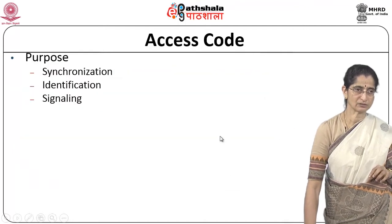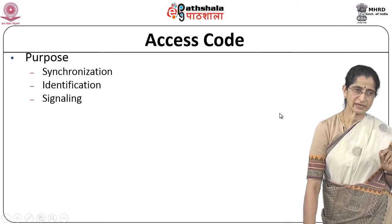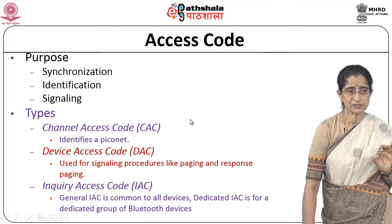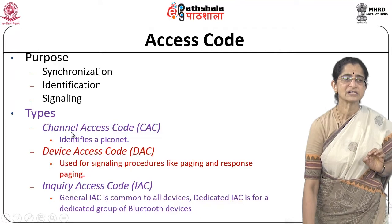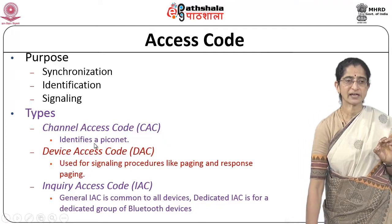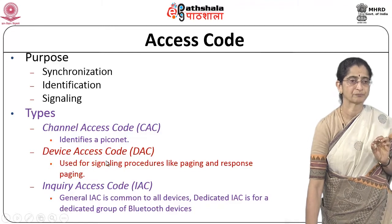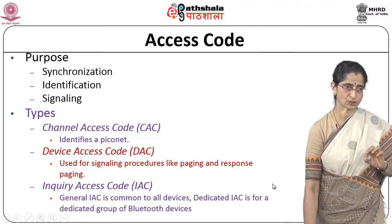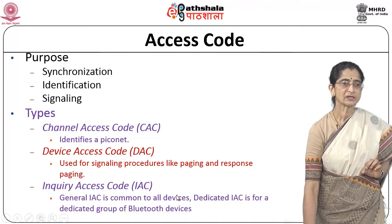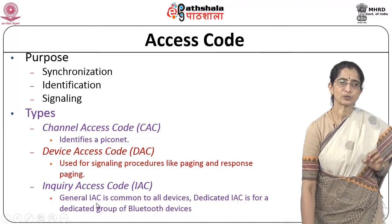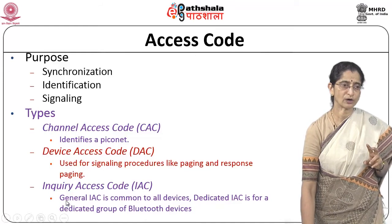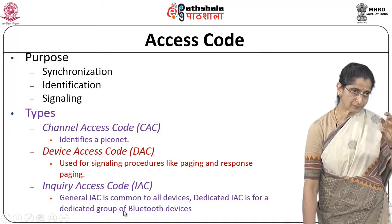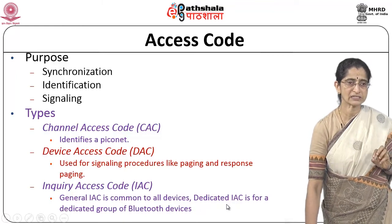The access code provides synchronization, identification, and signaling. There are different types of access codes: the Channel Access Code (CAC) identifies a particular Piconet; the Device Access Code (DAC) is used for signaling procedures like paging and page response; and the Inquiry Access Code (IAC) has two variants — the General IAC (GIAC), which is common to all devices, and the Dedicated IAC (DIAC) for a particular dedicated group of Bluetooth devices.